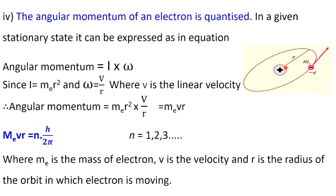So we have to understand all that. We substitute into the formula and simplify. The angular momentum is MeVr — where Me is electron mass, V is velocity, and R is radius. This is the model of the hydrogen atom.